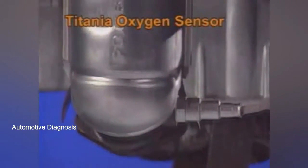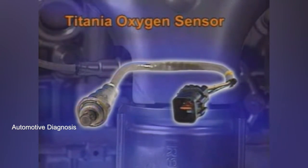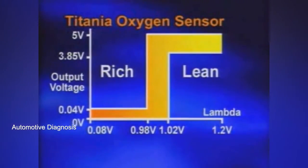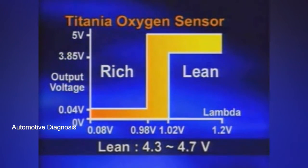The Titania Oxygen sensor, unlike the Zirconia sensor, requires a voltage supply as it does not generate its own voltage. The Titania Oxygen sensor changes resistance depending on the air-fuel mixture. The ECM supplies 5 volts power and measures the voltage drop. The output voltage range of the Titania Oxygen sensor is 0.5 to 4.5 volts — 0.5 volts indicates a rich mixture and 4.5 volts indicates a lean mixture.